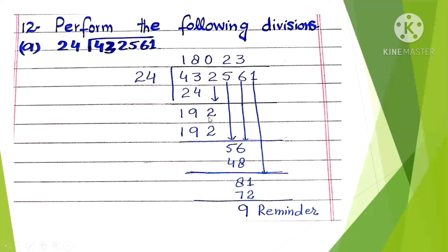Bring down next digit 1 — it becomes 81. Multiply 24 by 3 to get 72. Subtract: remainder is 9. The answer is 18,023 with remainder 9. You will do Part C yourself. The divisor is a three-digit number 330, so take three digits from the dividend. 335 is greater than 330, so 330 times 1 is 330. Subtract: 5 minus 0 is 5, 4 minus 3 is 1 — leaving 5. Bring down 6 to get 56 — smaller than 330, write 0. Bring next digit, making 569. Multiply 330 by 9 to get 2,970 — wait, subtract to get 249. Bring down 5, making 2495. Multiply 330 by 7, subtract — remainder is 185.